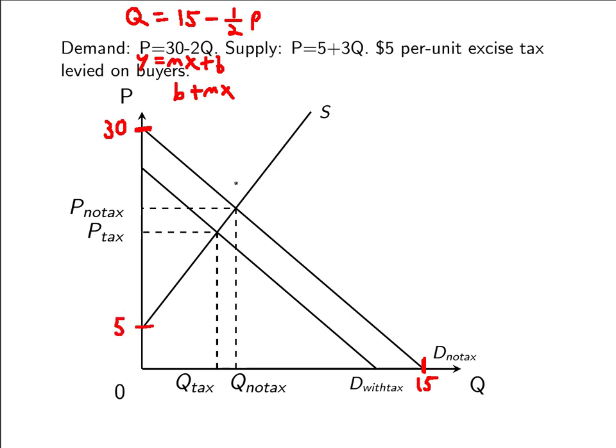Now you want to find the equilibrium price and quantity before the tax. For demand, you have p equals something. Supply, you have p equals something. So since they both equal p, they can be set equal to themselves. So 30 minus 2q equals 5 plus 3q. Let's subtract 5 from both sides. Let's add 2q to both sides. So we get 5q equals 25. And divide by 5, we get q equals 5. So we know this q with no tax is 5.